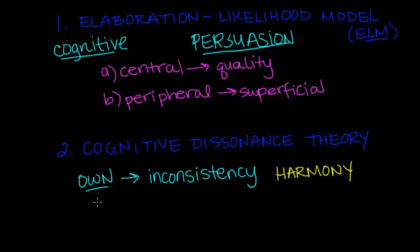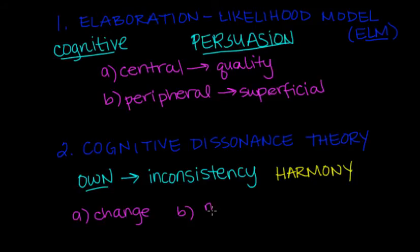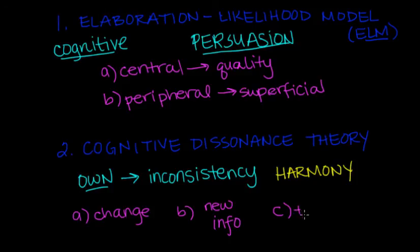We can reduce dissonance in three ways. The first is simple change — just change your behavior or change your attitude. The second is acquiring new information to support an attitude; the cognitive approach deals with activating information or knowledge to mold an attitude, and this is exactly where that comes from. The third, which is less common, is called trivializing the inconsistency — suppressing it, making it seem like it's not there or not as important. This will probably be used if the other two don't work in fixing an inconsistency.